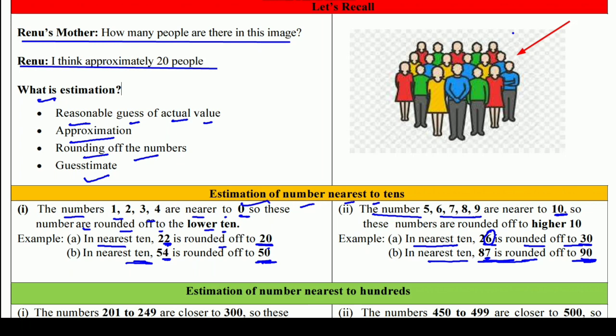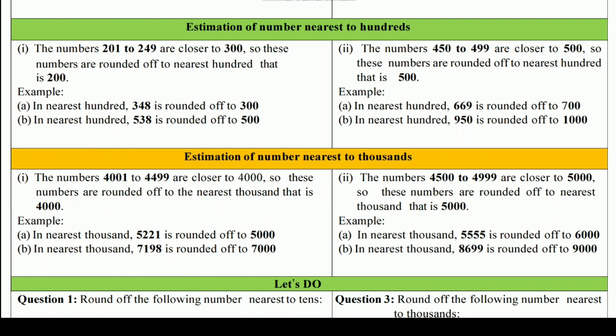Estimation of number nearest to hundreds: जब 100 तक nearest करना है, तो हम last के 2 digits देखते हैं। अगर ये 50 से कम हैं, तो पहले वाले 100 पर; 50 या 50 से ज़्यादा हैं, तो next वाले 100 पर। जैसे 348 — last 2 digits 48 हैं, जो 50 से कम हैं, तो 300 पर रहेगा। लेकिन अगर 50 से ज़्यादा है, तो next वाले 100 पर जाएंगे।